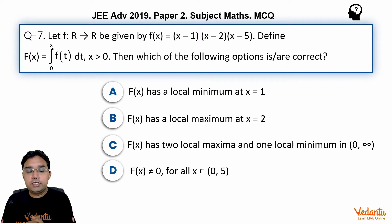Let us first see what this question is. Let f: R to R be given by f(x) = (x - 1)(x - 2)(x - 5). Define capital F(x) equal to integral from 0 to x of f(t) dt, x greater than 0.